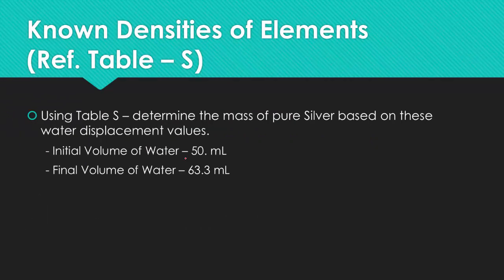Using reference table S, which is going to be a ton of information, we're going to first figure out the mass of pure silver based on the water displacement values that we have. We're taking a lump of silver and dropping it into 50 milliliters of water. When we drop it in, we notice that the water level rises up to 63.3 milliliters. Remember, it does that because volume represents the amount of space it takes up. You're noticing it from 50 to 63.3, from start all the way to finish.